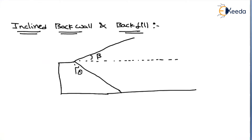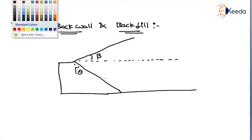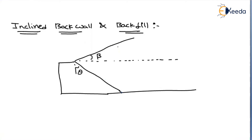We have an inclined back wall and also an inclined backfill — so how do we proceed? Suppose if it is an inclined back wall, from the toe we will draw a vertical line. Now this is becoming a normal case but with an inclined surcharge beta.